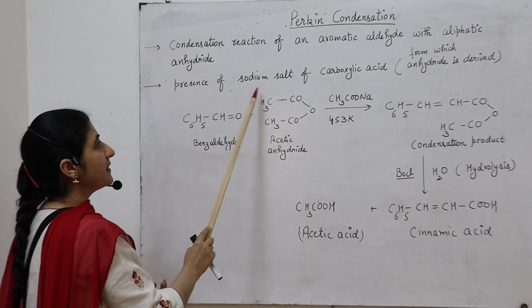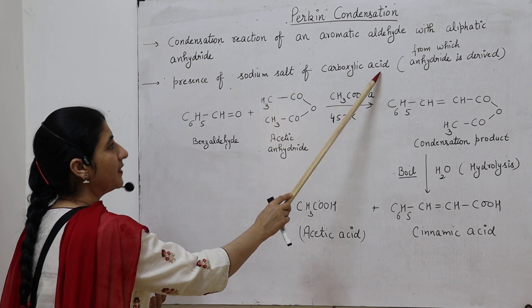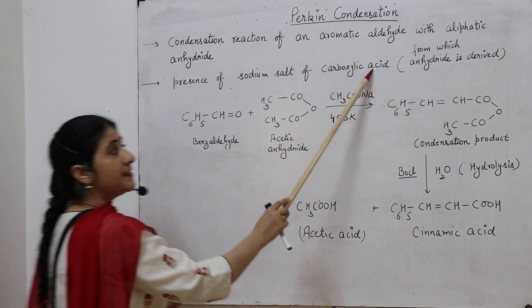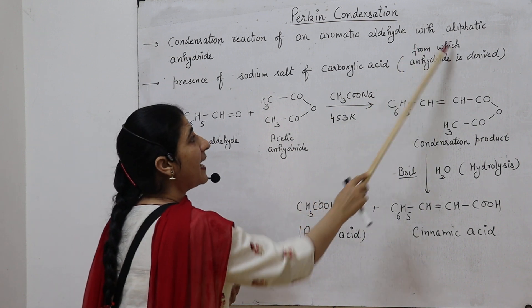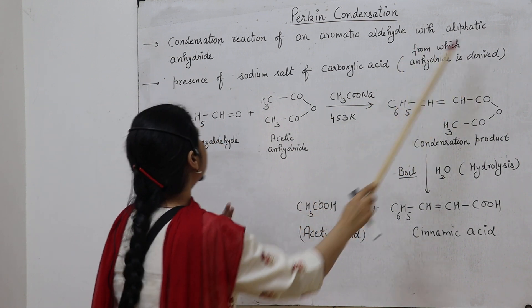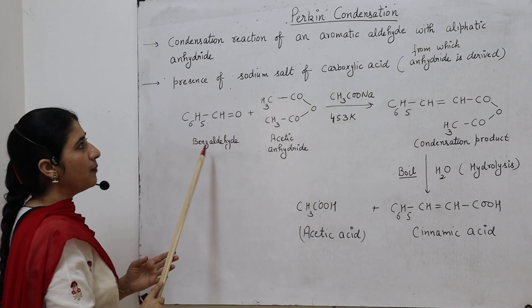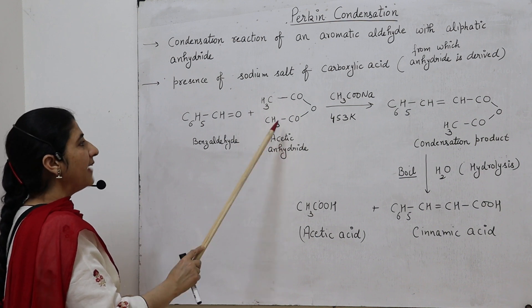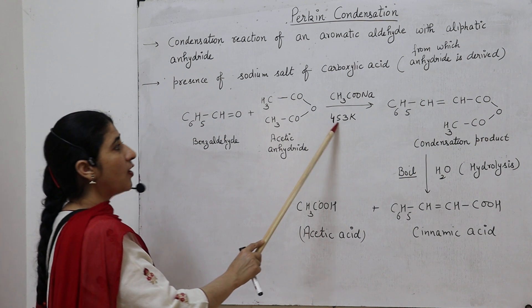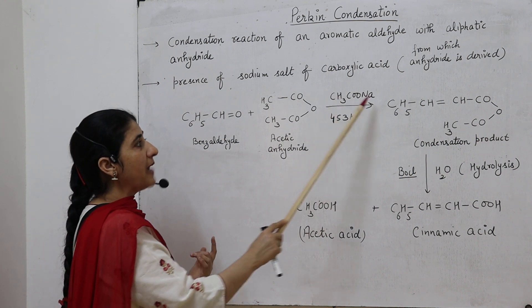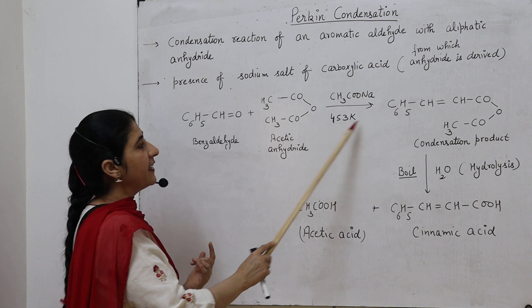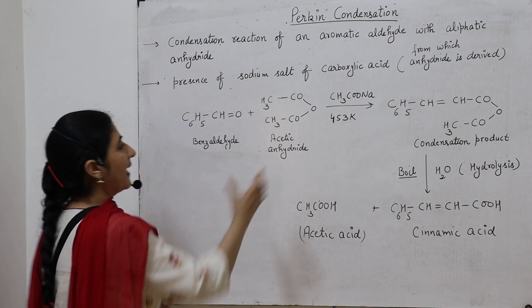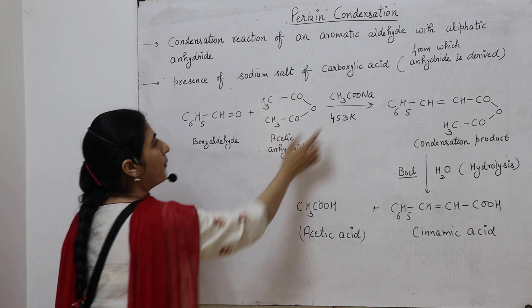It takes place in the presence of sodium salt of carboxylic acid — specifically, the carboxylic acid from which the anhydride is derived. In this reaction we use aromatic aldehyde, which is benzaldehyde, that reacts with acetic anhydride. These two compounds are heated in the presence of sodium acetate at 453 Kelvin. We use sodium acetate because the anhydride is derived from acetic acid.